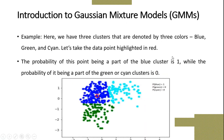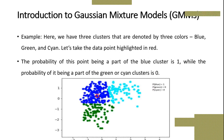Let us take another example to see how this works. We have three clusters denoted by three colors: blue, green, and cyan. Consider the data point highlighted in red. The probability of this point being part of the blue cluster is 1, while the probability of it being part of the green and cyan clusters is 0, because we are placing this data point at the blue cluster.